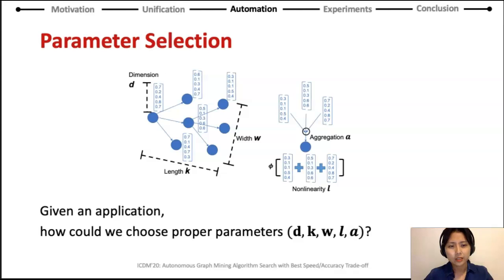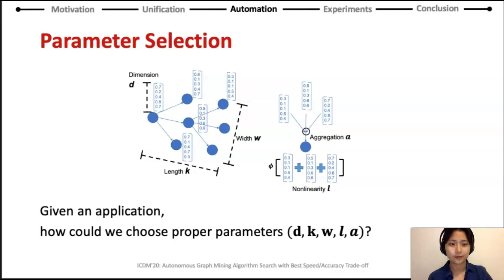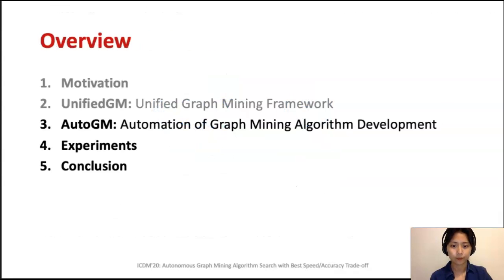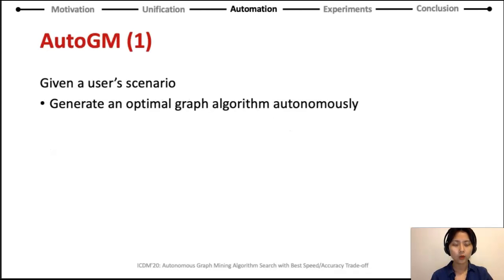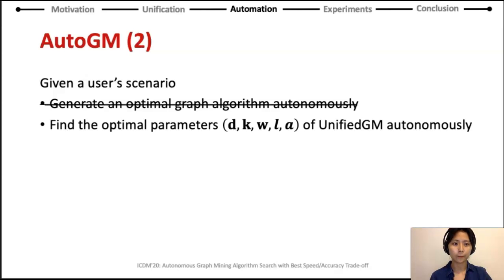We have seen that message passing-based graph mining algorithms are unified under Unified GM with five parameters. The following question is: how can we find the proper parameters? Given an application, what are the appropriate parameters to generate an optimal graph mining algorithm? We now introduce our automated system to generate an optimal graph algorithm autonomously. AutoGM's goal is: given a user scenario, generate an optimal graph algorithm autonomously. Under Unified GM, we can replace this goal with finding the optimal parameters D, K, W, L, A of Unified GM autonomously.